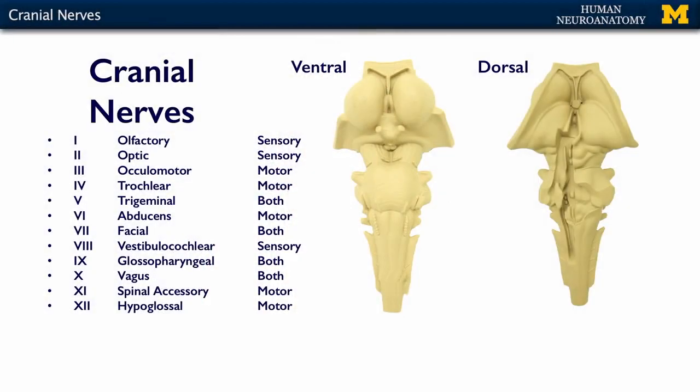You'll notice these go O-O-O-T-T-A-F-V-G-V-S-H. If you look online, you're going to see a million and one different mnemonic devices for remembering the order of the cranial nerves. When I was a first-year graduate student, I learned 'On old Olympus towering top, a Finn and German viewed some hops.' It worked for me up to this point in my life. You will find your own mnemonic for remembering the order of the cranial nerves and what each one stands for.